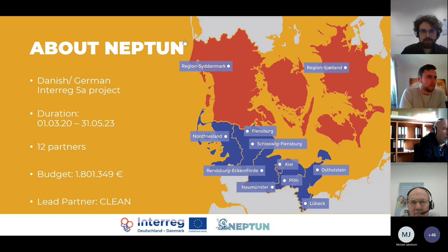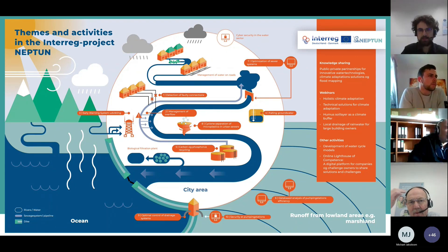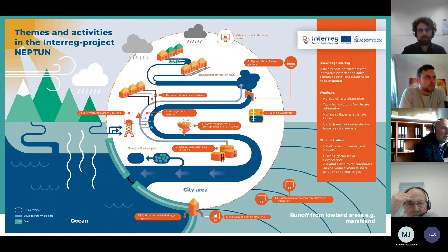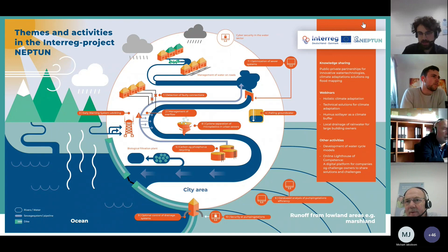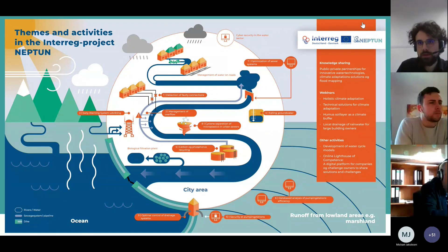The lead partner is the aforementioned Danish Water Cluster KLEAN, which is helping us with the technology today. At the core of Neptune are innovation collaborations, where universities, companies, and problem owners work together to solve technical issues. The goal was to develop prototypes. Some examples include detecting faulty sewer connections more efficiently, the recycling of carbon and phosphorus from sewage sludge, and the optimization of drainage systems — both in urban areas like Flensburg, and in very rural wetlands on the west coast of southern Denmark and Schleswig-Holstein.